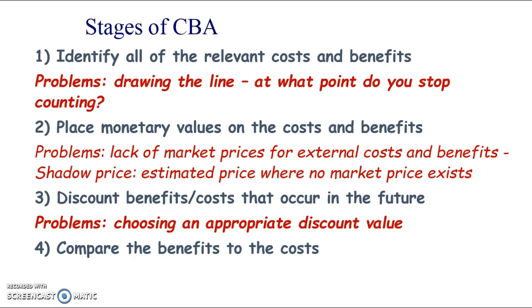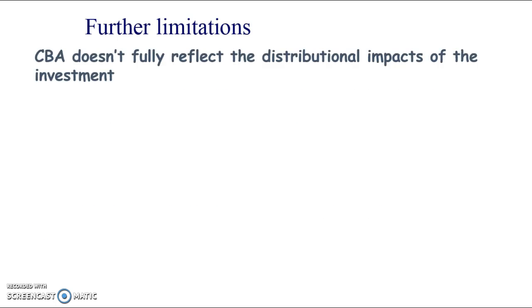The fourth stage is to compare your benefits to your costs. Usually the government might have a few different options to choose between, and you want to pick the option with the highest ratio of benefits to costs, because that gives you the best return on the investment. A further limitation is that cost-benefit analysis doesn't fully reflect the distributional impacts of the investment. With HS2, a lot of the benefits occur in the Birmingham or London areas, but a lot of the costs fall on the countryside between those cities — the people who have to move house and whose scenery is potentially destroyed. So it's a bit unequal who's getting the benefits and who's bearing the costs.